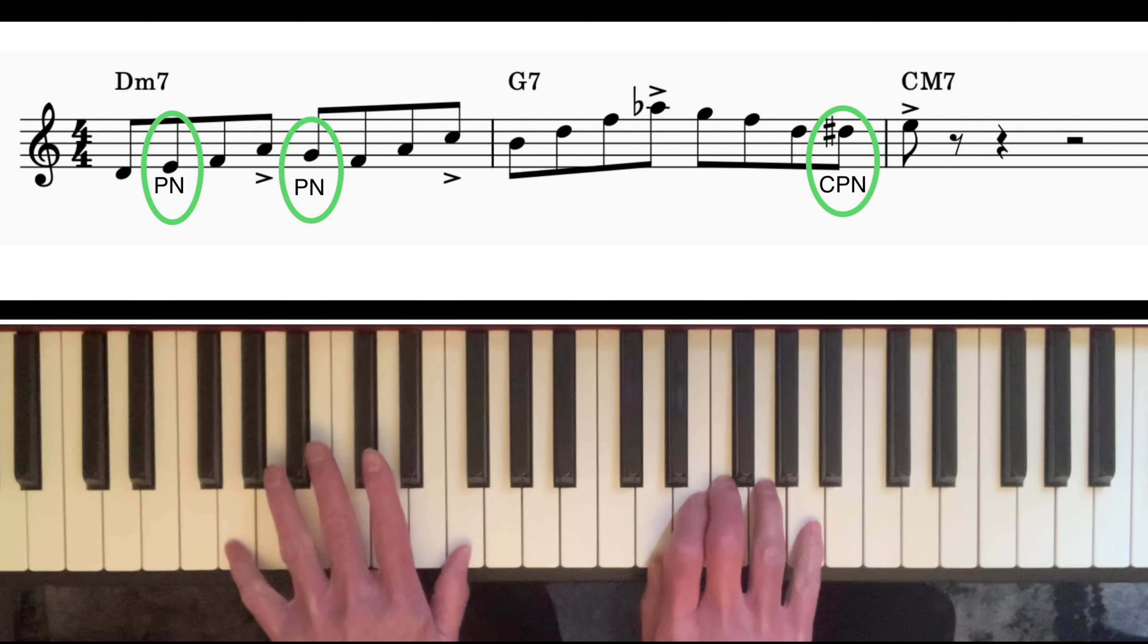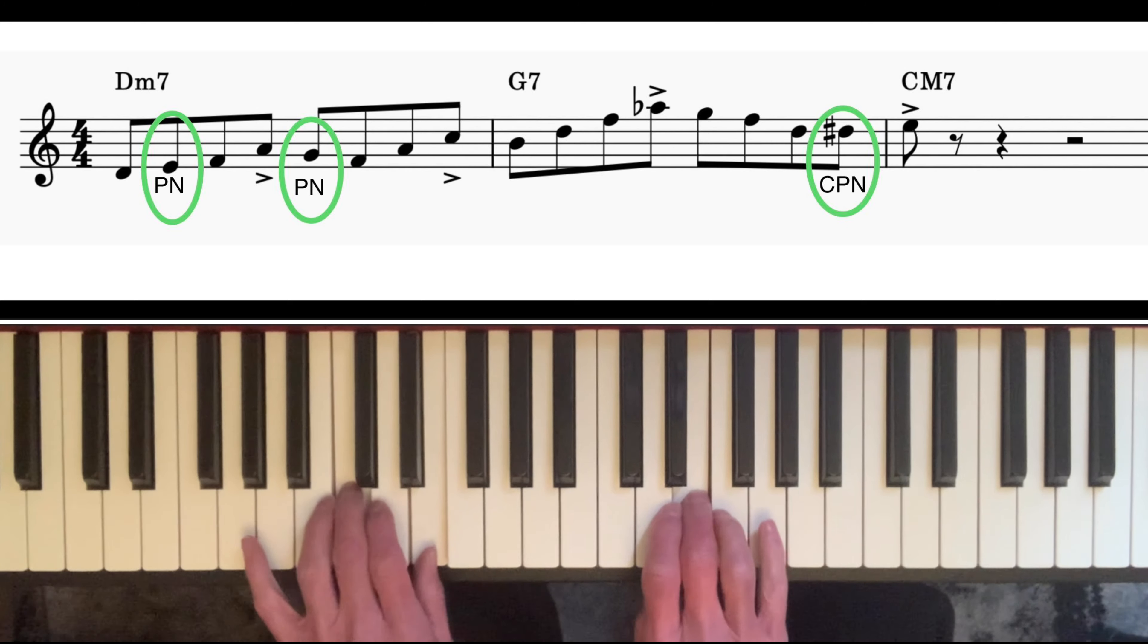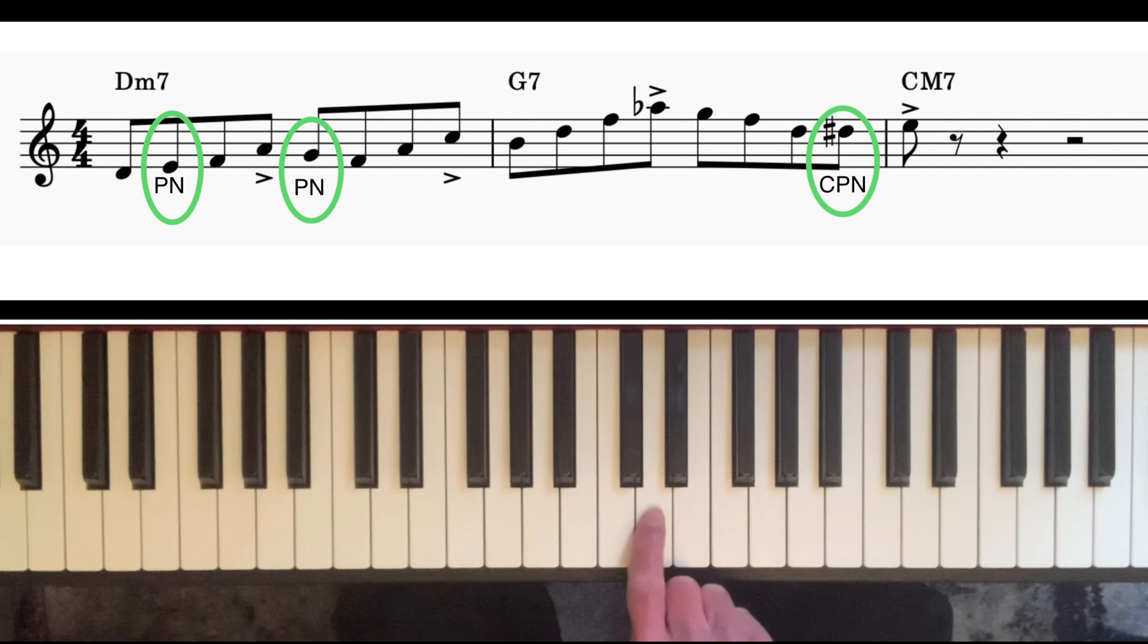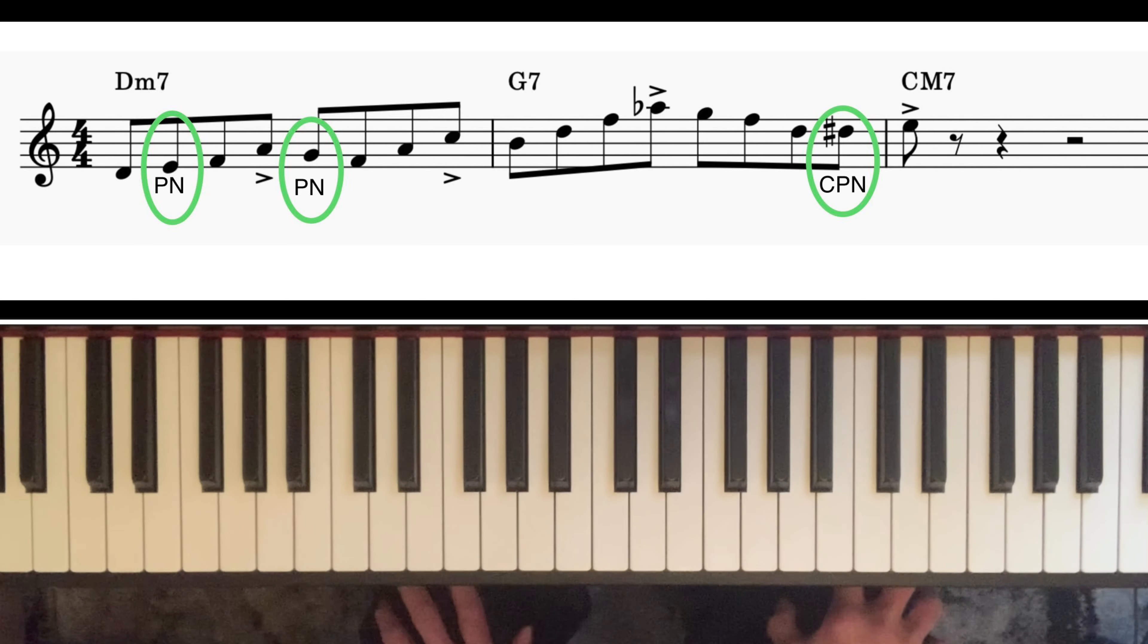You can do it going from G7 to C, you can do it just on the C chord itself. It does this little circle around the third of C major seven.